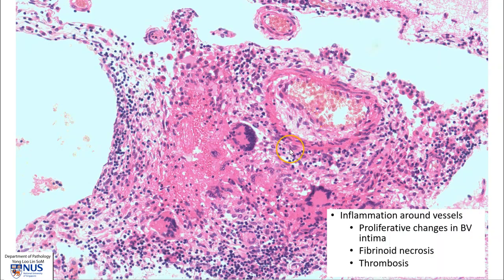Here is one example of a blood vessel with subintimal proliferation. We can see here this granulomatous inflammation comprising epithelioid histiocytes, admixed with lymphocytes as well as many Langhans-type giant cells.